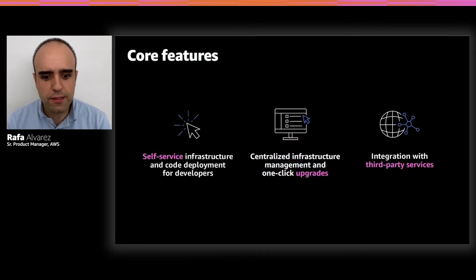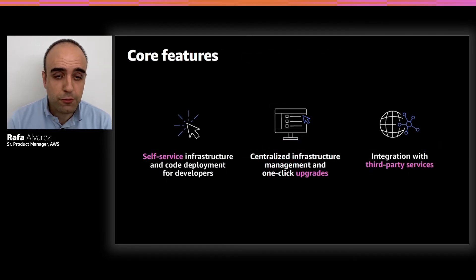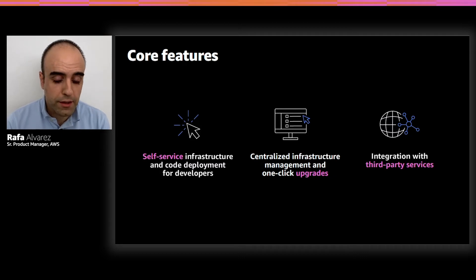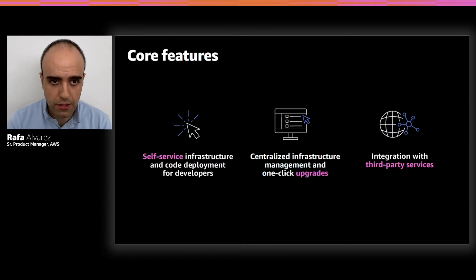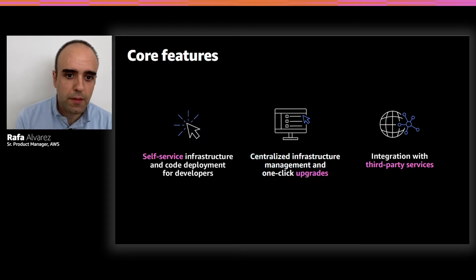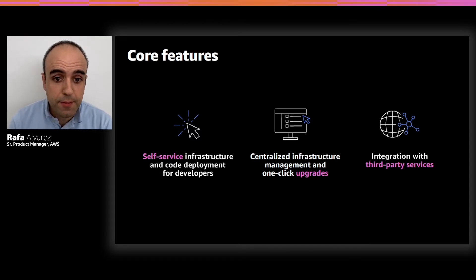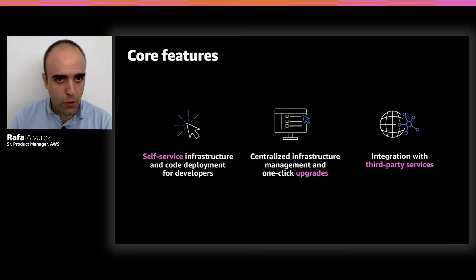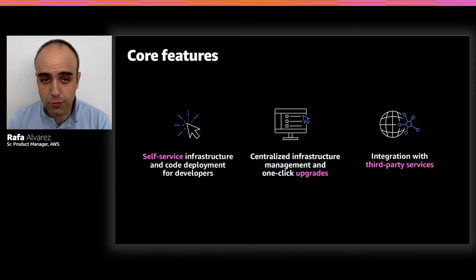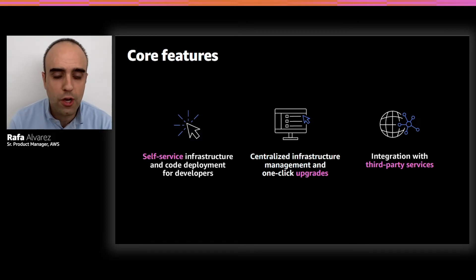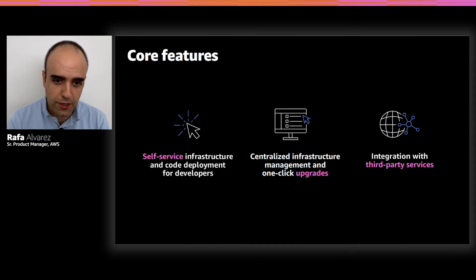When we think about Proton, we always think about three core features. The first one is that for developers, it offers a self-service infrastructure and code deployment interface — there is just one place to go as a developer to get my code up and running in production. Proton will take care of all of the pieces: infrastructure, pipeline, and observability. As an infrastructure team, it gives me that centralized management tool — from one single location I can see everything that has been deployed, by whom, whether it's healthy, and whether it's running the latest version. Plus it gives me the capacity to upgrade things with one click.